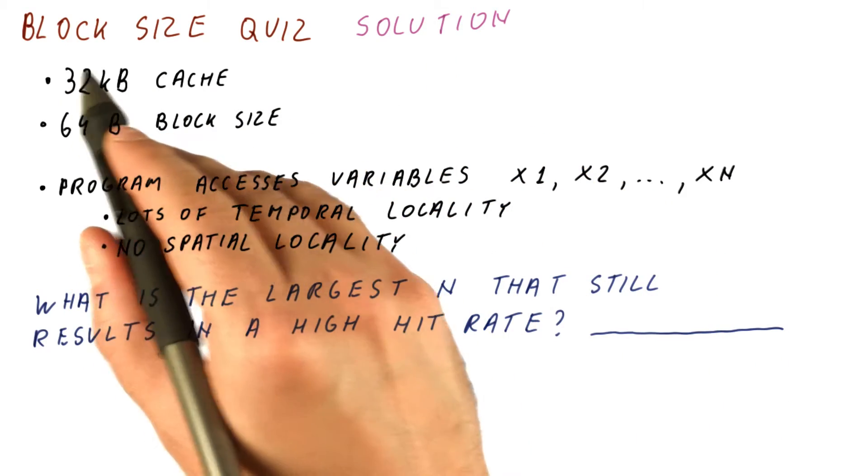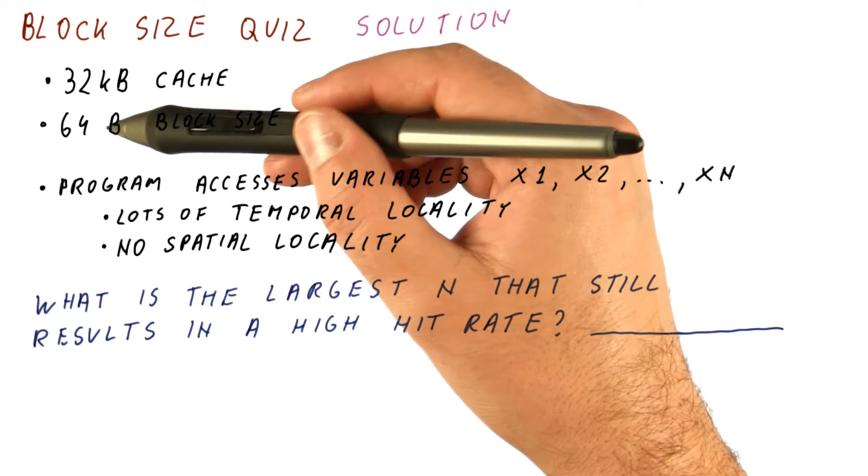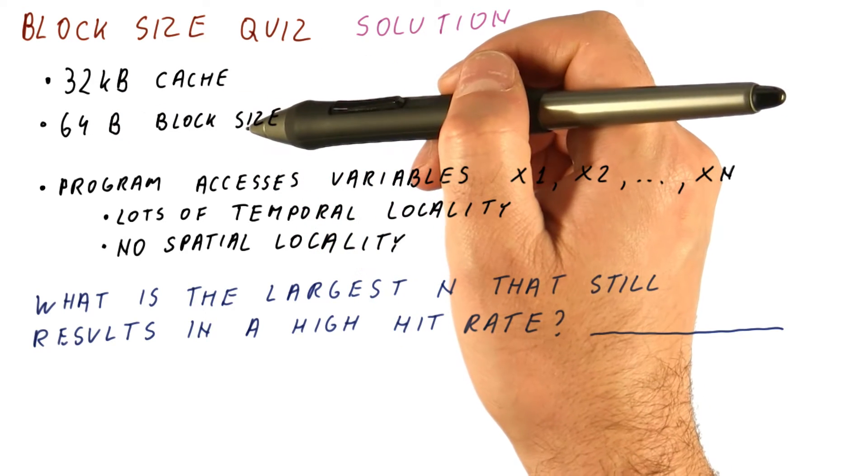Let's look at the solution to our block size quiz. We have a 32 kilobyte cache with 64 byte block size.